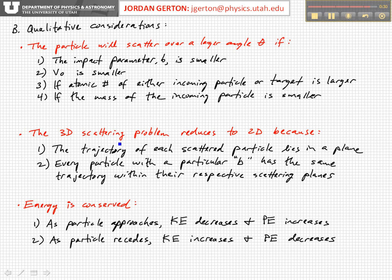We also realize that this three-dimensional scattering problem reduces to two dimensions, because the trajectory of each scattered particle lies in a particular plane, and every particle with a particular impact parameter B has the same trajectory within their respective scattering planes. Finally, energy is conserved: as the particle approaches, kinetic energy decreases and potential energy increases, and this is reversed when the particle is receding.